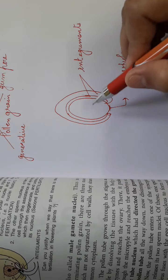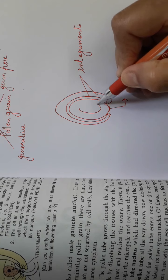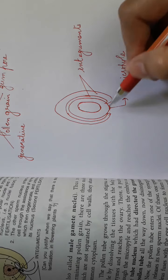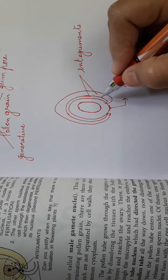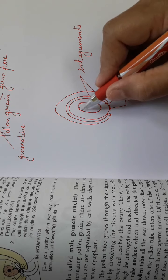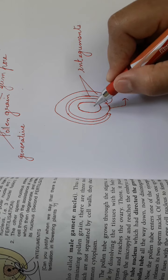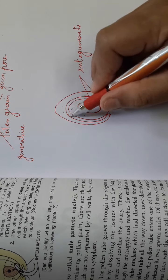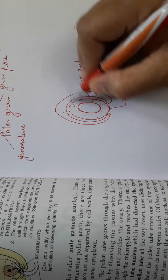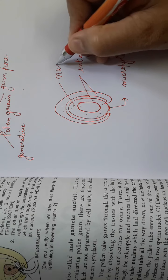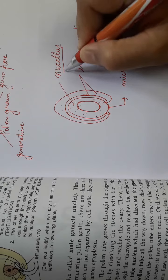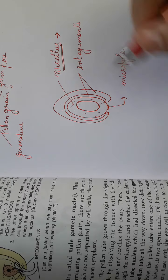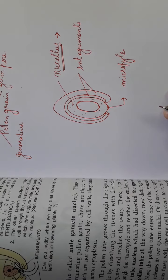Inside the ovule there is an egg sac — the embryo sac. This whole structure is the ovule. The two protective layers are the integuments, and inside I have drawn the embryo sac. The embryo sac is surrounded by a nutritive tissue called nucellus, which provides nourishment. It is made up of parenchymatous cells which provide nourishment during fertilization and all the processes that follow.